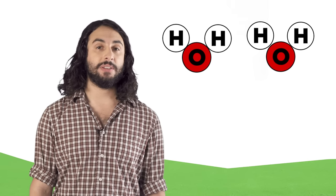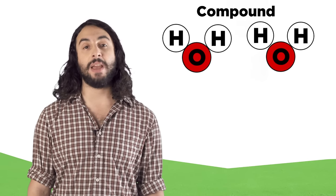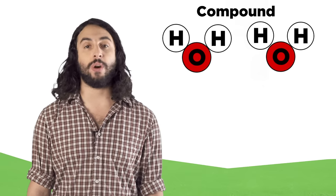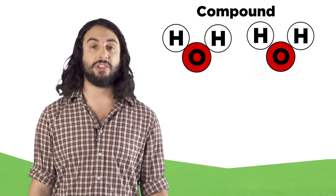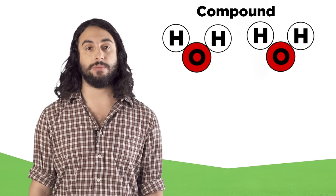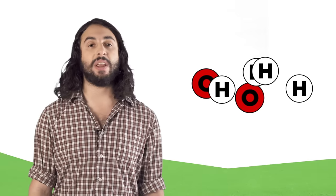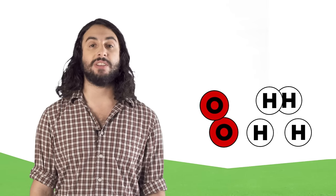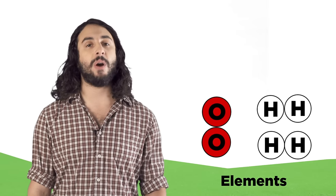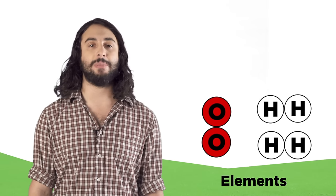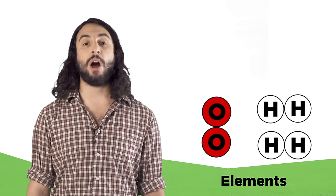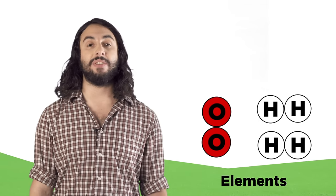An element can't be broken down into smaller parts by physical or chemical means. For example, water is not an element — it's a compound, because it is made of two or more elements, in this case oxygen and hydrogen. By a chemical process we can divide water into these two elements, but that's as far as we can go with chemistry. These are now molecules of a given element.